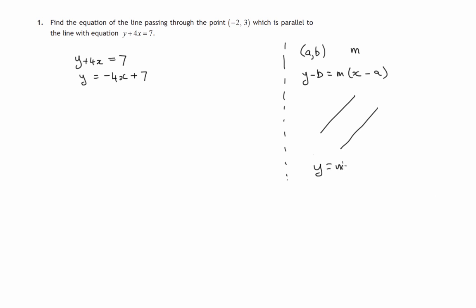y equals mx plus c. That's the gradient and this is where it crosses the y-axis. We're not needing this part but we certainly do need the gradient. So that implies gradient is negative 4.